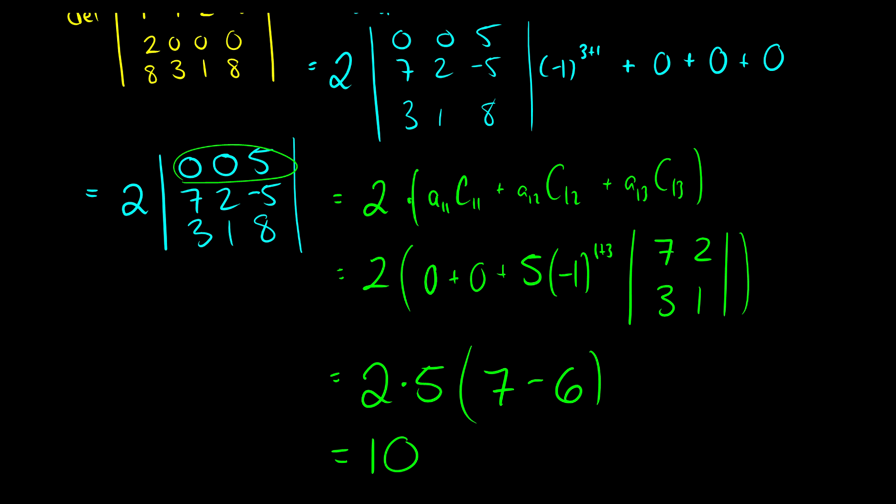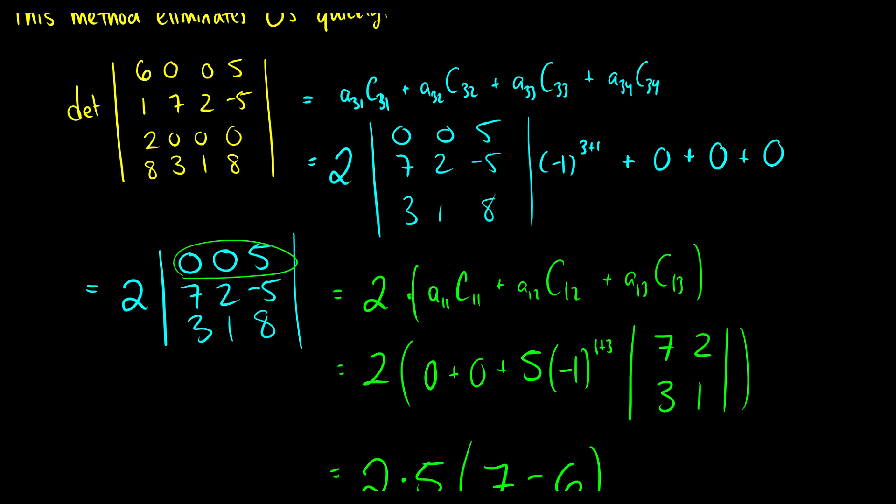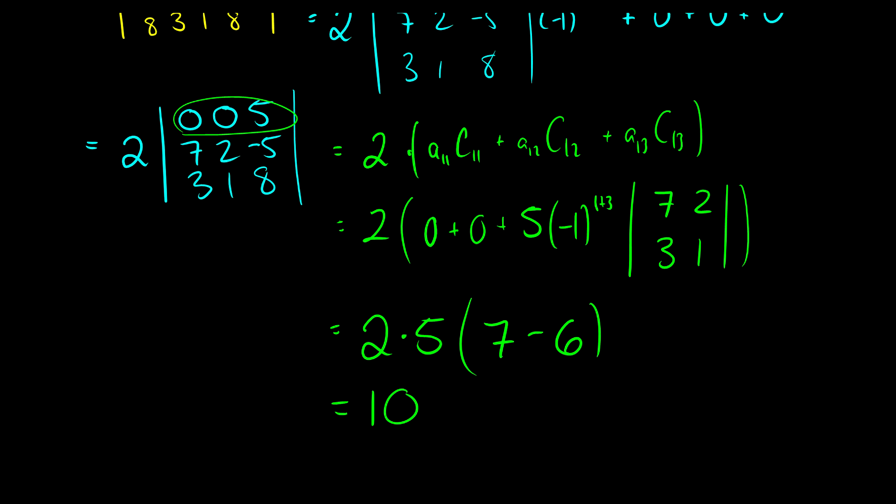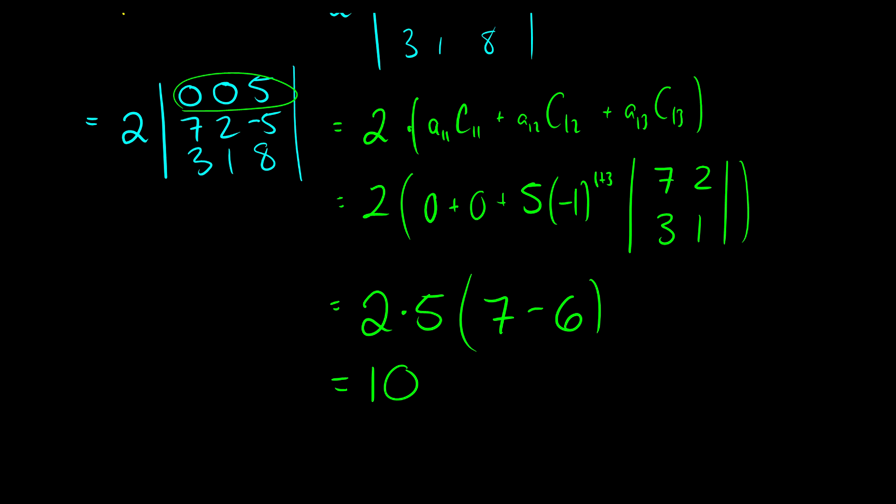With cofactor expansion, we made this a lot easier because before we would have had to go across the top first. We would have had to do 6 times this submatrix, and then minus plus minus 5 times this submatrix, and then we would have had to do the determinant of two of these submatrices independently, and we would have had to move across the top row here. So we never would have been able to simplify our work, and doing this by hand would have taken a lot longer. So on exams, cofactor expansion is your best friend. Pick the easiest lines and do it.